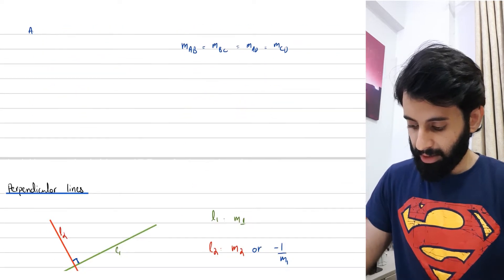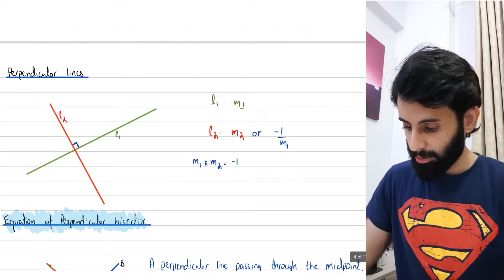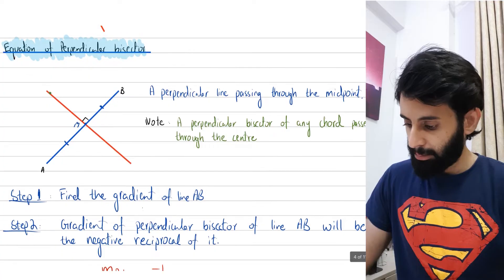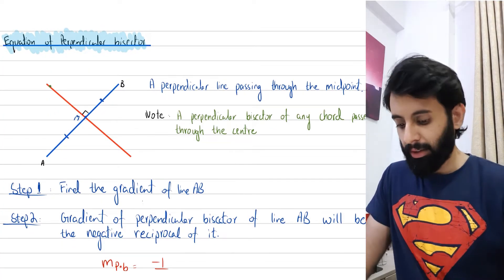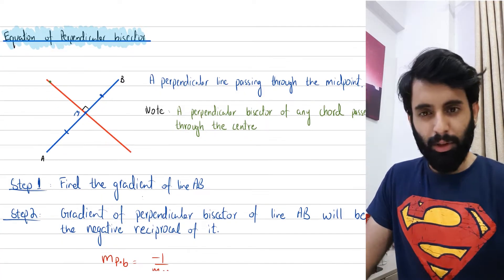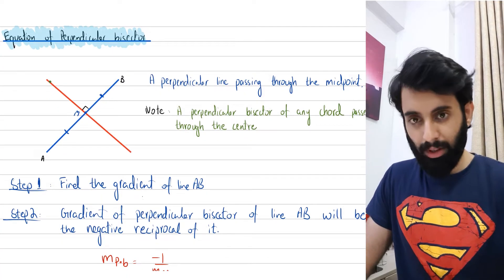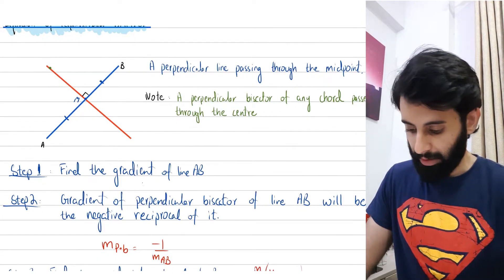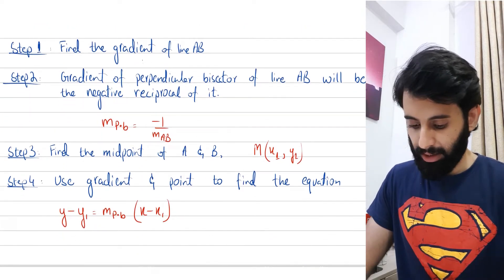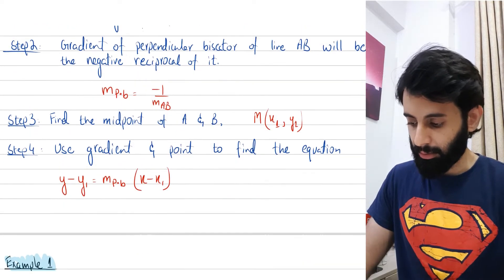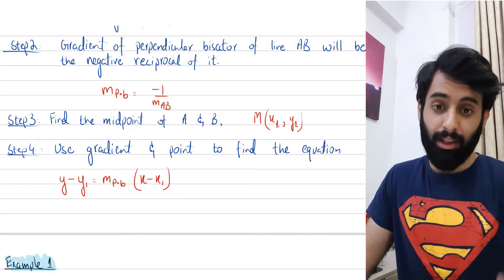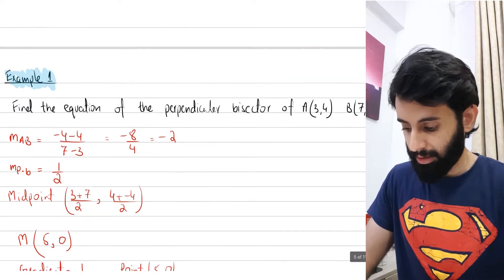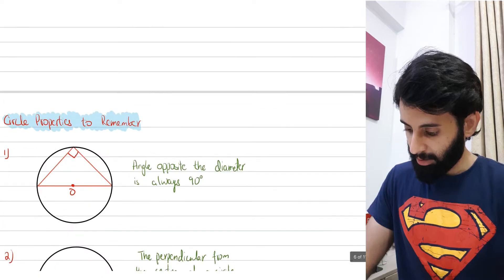The gradient is again very important because you need to know what exactly to do when we find the gradient of a certain line — whether we need to find the gradient of a line perpendicular to it or parallel to it. And then collinear points, stuff like that. Nothing that we haven't done before, except the equation of perpendicular bisector, which is not very common in O-levels.